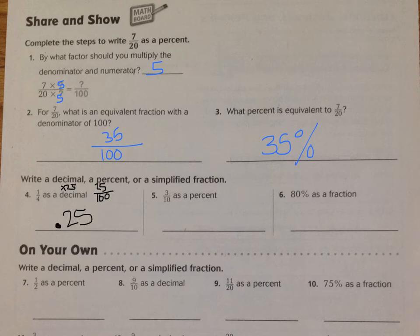Number five, three-tenths as a percent, it still needs to be out of a hundred. I need to multiply my numerator and denominator by something so that my denominator is a hundred. Ten is my denominator. I'm going to multiply it times ten to give me one hundred. So that means I need to multiply my numerator times ten. That's going to be thirty out of a hundred, which is the same as thirty percent.